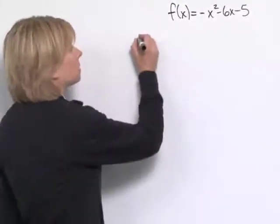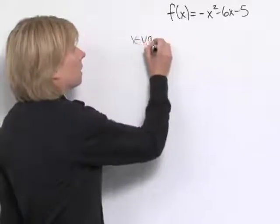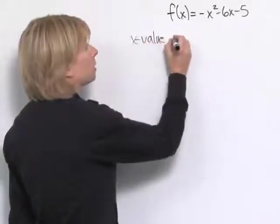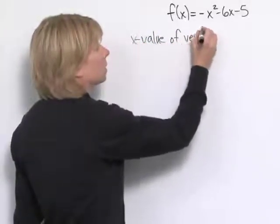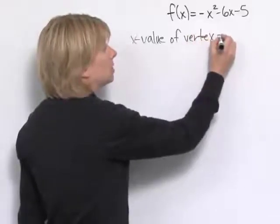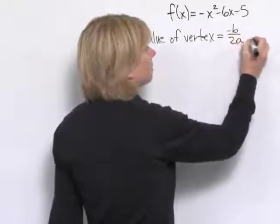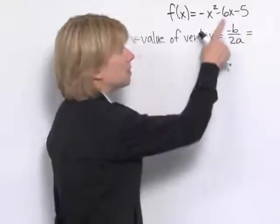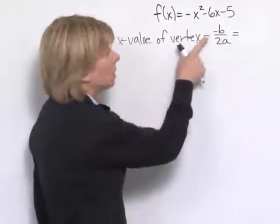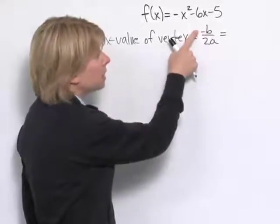First we'll find the vertex and the x-value of the vertex. Our hint told us is -b/(2a). And in this case, b is -6, so up here we'll have a positive 6.